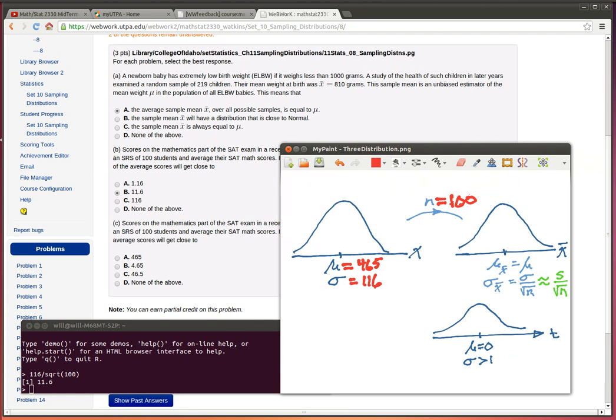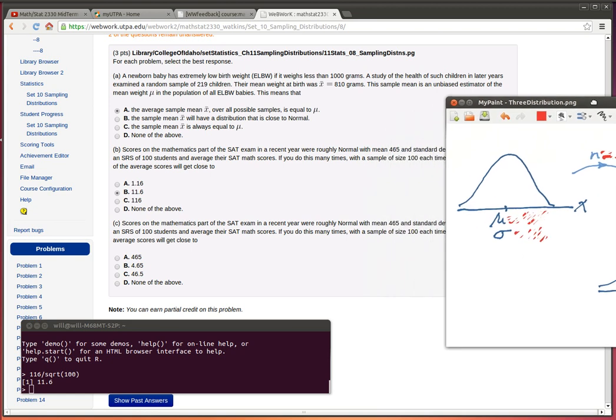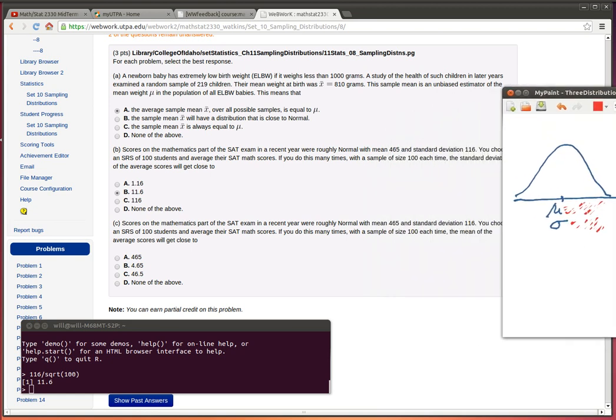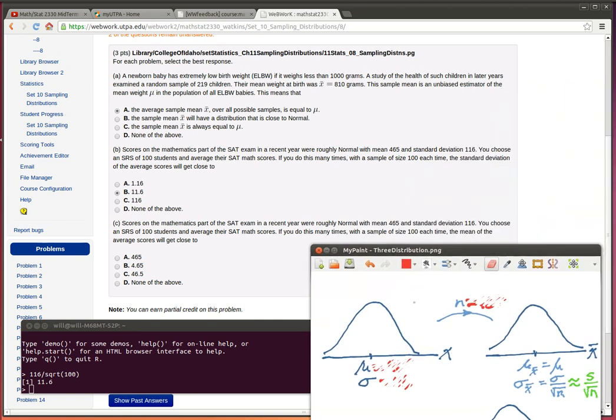Okay, so now I've still got this same three distributions. The score on the mathematics part of the SAT test in a recent year is roughly normally distributed. Oh, I should have left those same scores in there shouldn't I, because the mean here is 465 again, and the standard deviation is equal to 116. Okay.